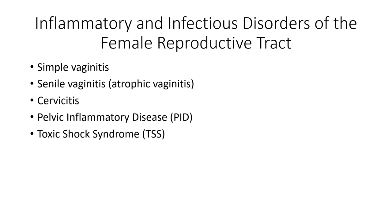During assessment, ask about pain and take a sexual history. A pelvic exam and culture and sensitivity are required to determine the pathogen causing PID. The patient may complain of lower abdominal and pelvic pain, dysmenorrhea (pain with menstruation), dysuria, and vulvar pruritus. Objectively, assess for fever, chills, and the amount and characteristics of vaginal discharge, which may be purulent to thin or mucoid.